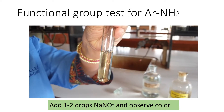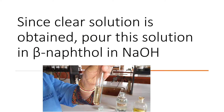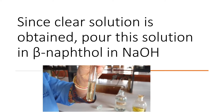After adding NaNO₂, shake the test tube and observe the color. At this point, if the substance is a tertiary amine you will observe red coloration; if the substance is a secondary amine you will observe a yellow oil or precipitate. But as you can see in this case, we have obtained a clear solution.